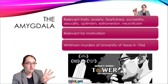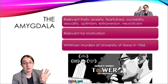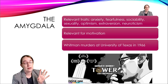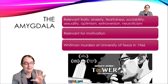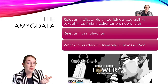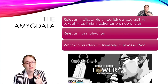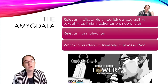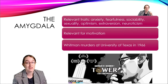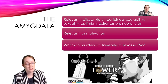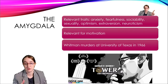Charles Whitman murdered a lot of people. He got a sniper rifle and went up to the tower at UT Austin. He murdered his wife, his mother, and 14 others. Afterwards, they autopsied him and found a malignant tumor next to his amygdala, and there's been a lot of speculation that this may have caused his motivation to murder all those people.